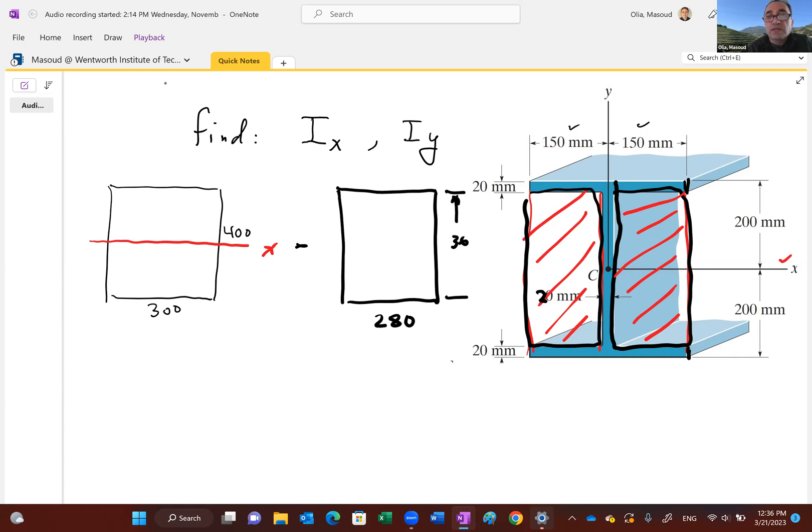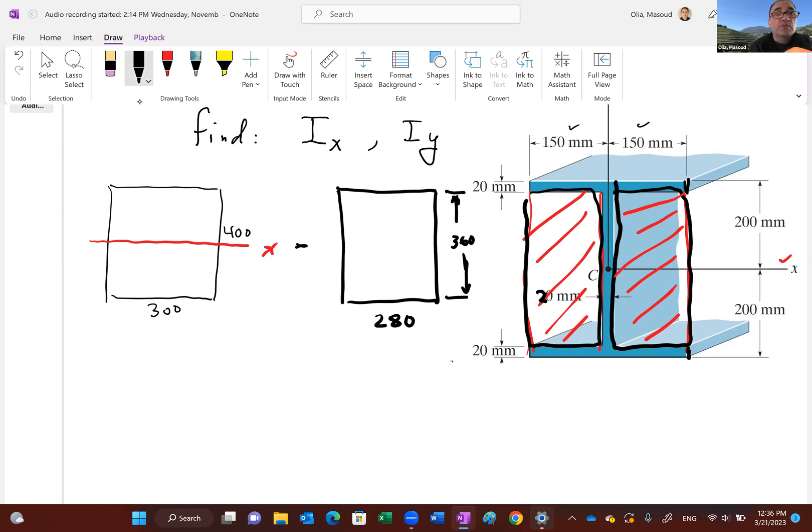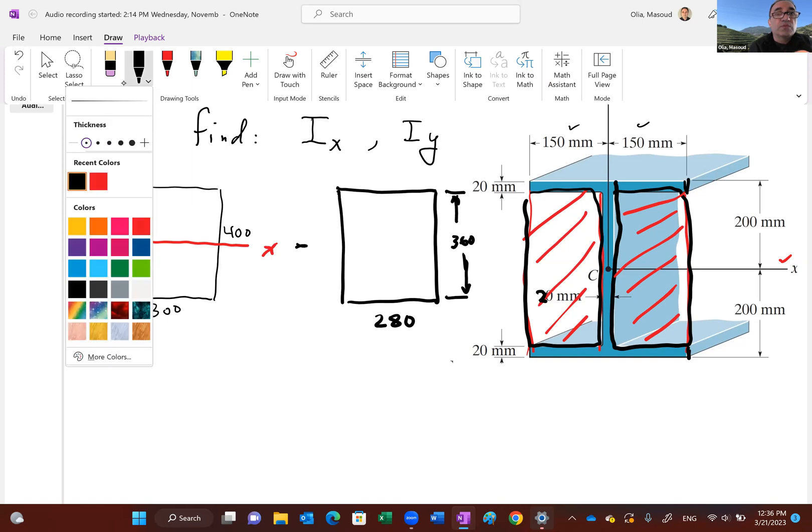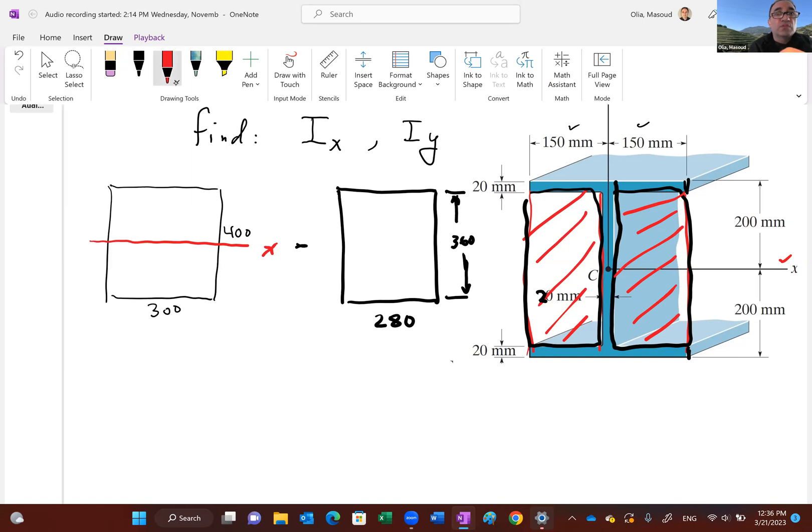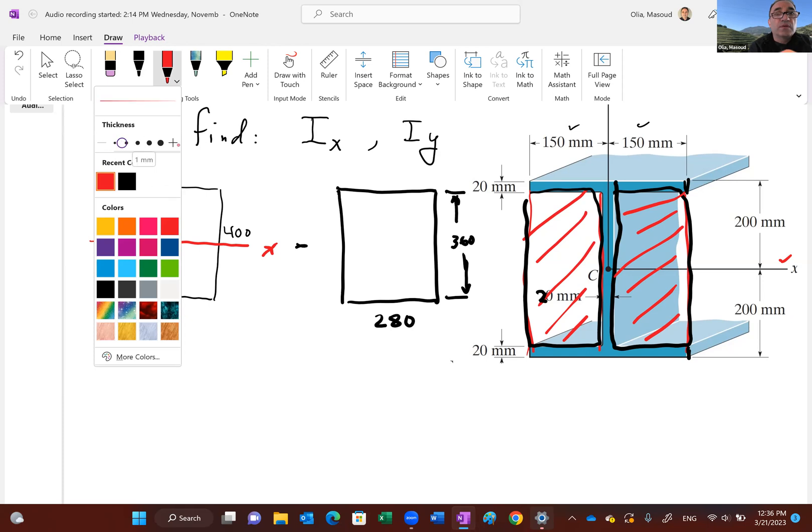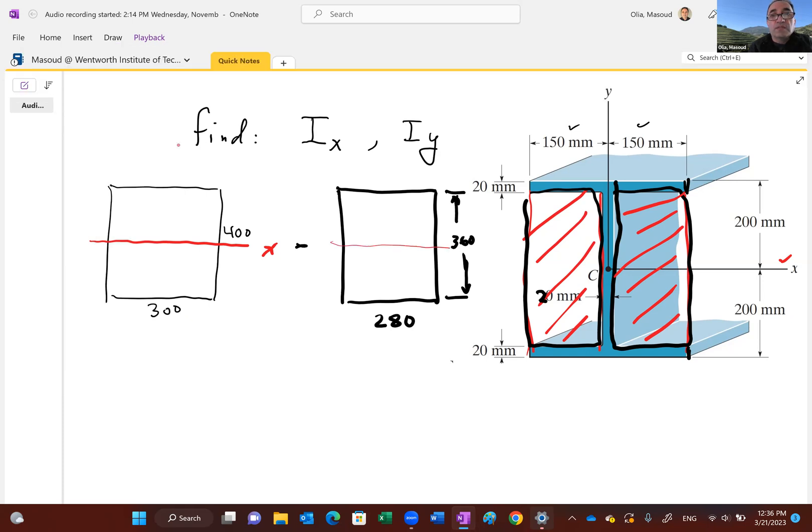Again, notice that the centroidal axis, x-axis is where it's supposed to be. I don't know why this got so thick. Let me go to a thinner situation here. There we go. All right, so this is the same x-axis.